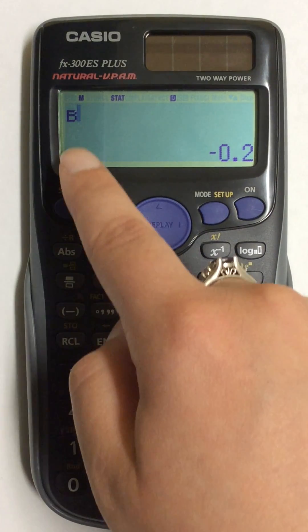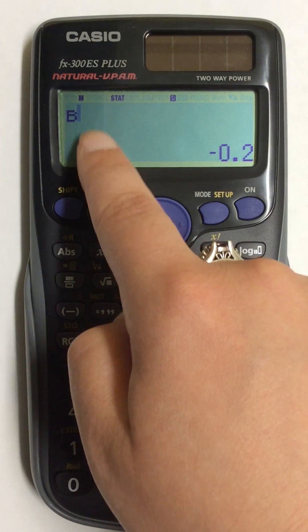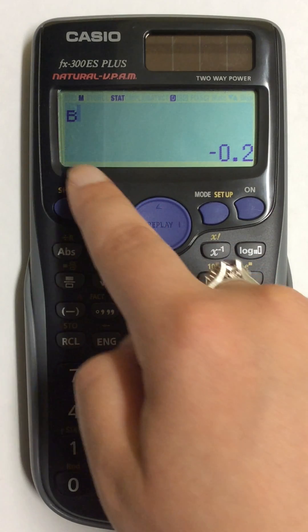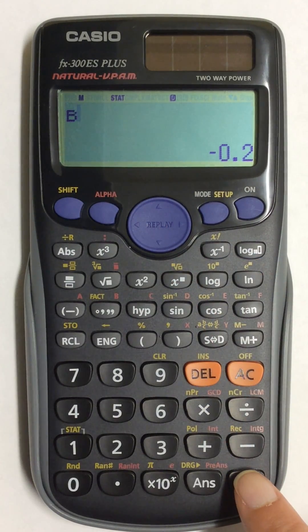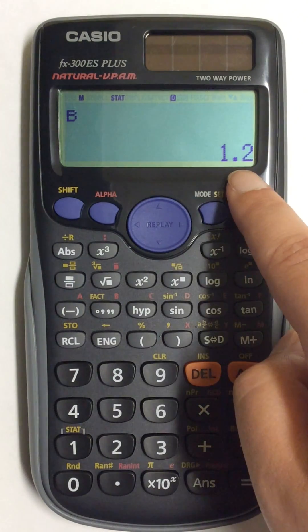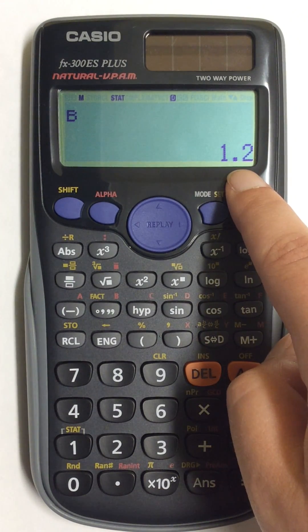So now B shows up on the screen with a blinking cursor, so I have to hit equals in order to find that value. And my B value now is 1.2.